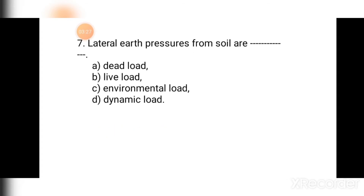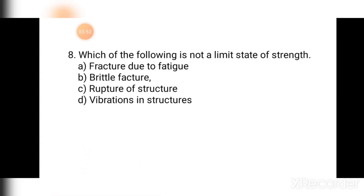Question number seven: Lateral earth pressure from soil is an example of — (a) dead load, (b) live load, (c) environmental load, (d) dynamic load. This is also an example of live load because its magnitude as well as its position changes. It is not a dynamic load but a live load. The correct answer is (b) live load.